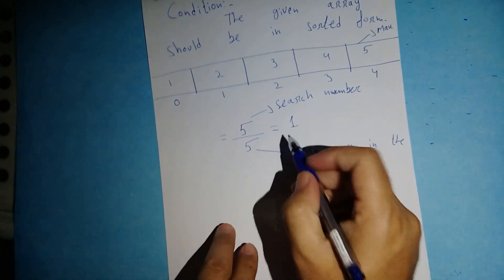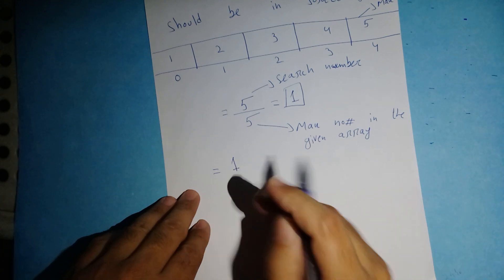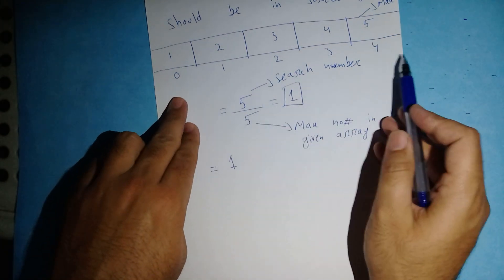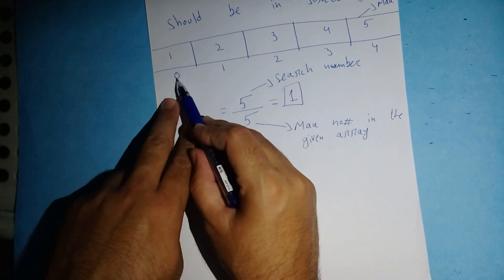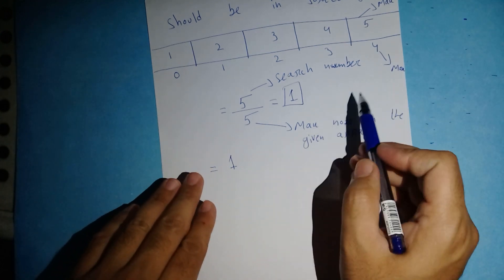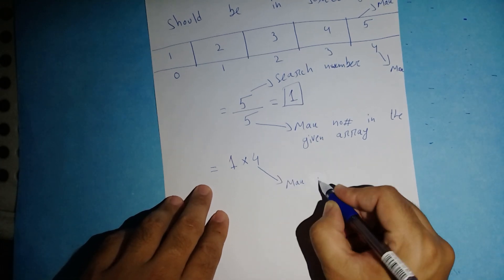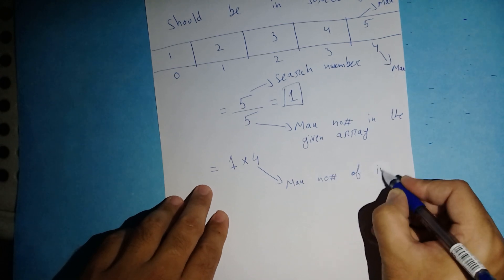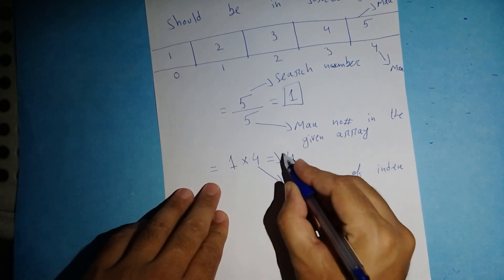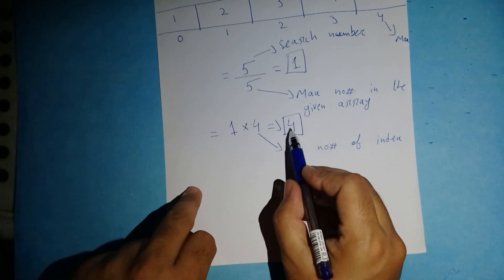The answer is one. Now I'm going to use this answer and multiply it with the maximum index number. The indices are zero, one, two, three, four — so four is the maximum index number. I multiply four by one, which gives me the answer four.